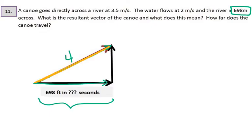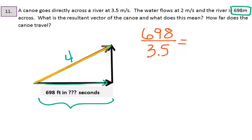Back to the question: if the river is 698 meters across, how long does it take to get across? A lot of people think we use the resultant 4 meters per second, but that's not correct. The boat is still taking the same number of seconds to cross. We simply do 698 divided by 3.5 meters per second, and we get approximately 199 seconds to cross the river.